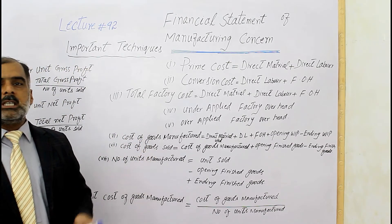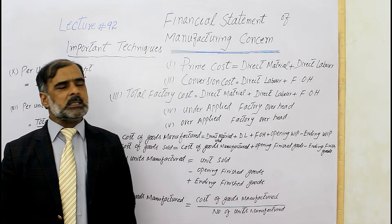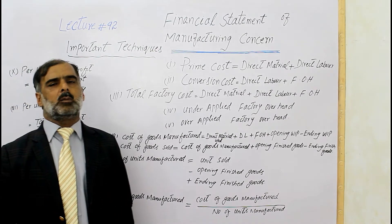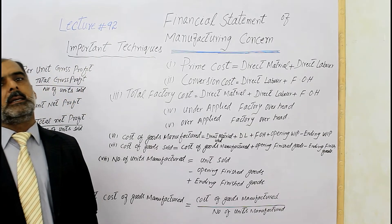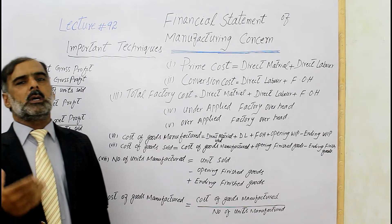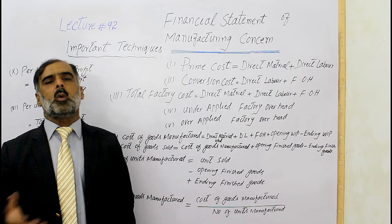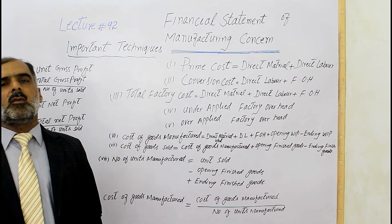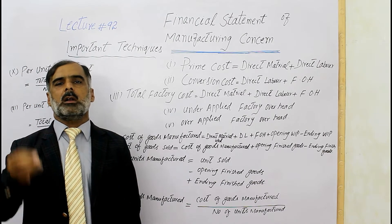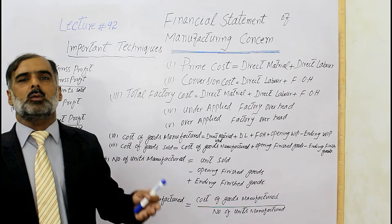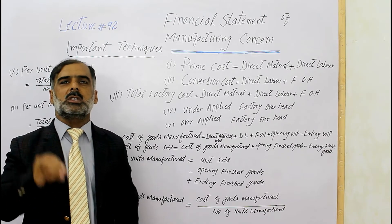In Financial Statement of Manufacturing Concerns, we have to calculate the cost. What is the total cost of production? What is the labor cost, what is the material cost, and what is the factory overhead cost? In this, our organization — our company — we calculate the cost of production.